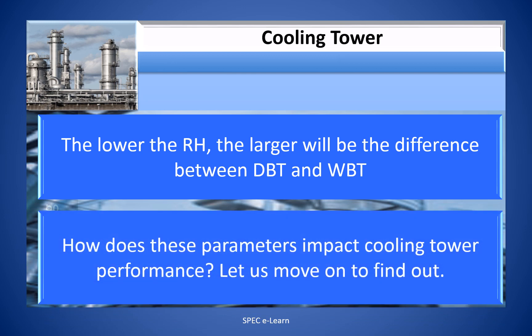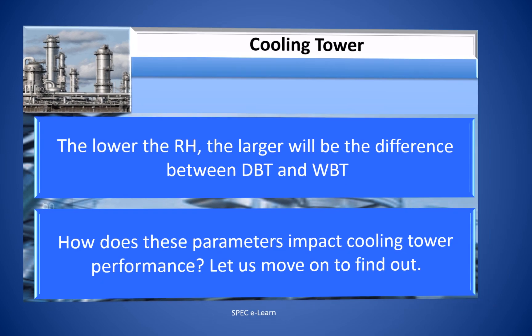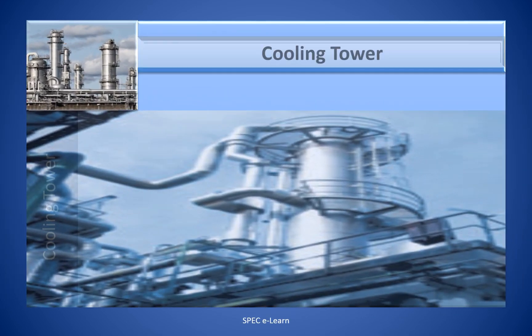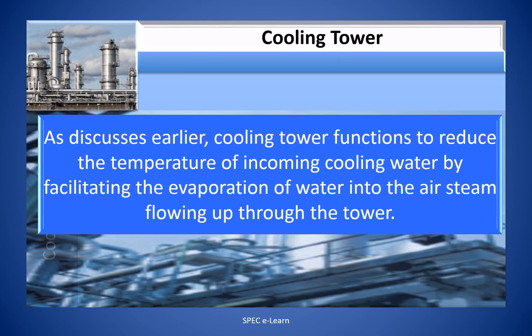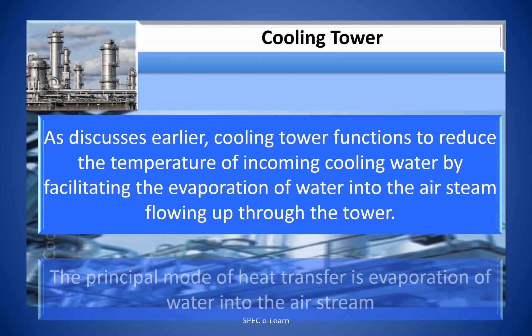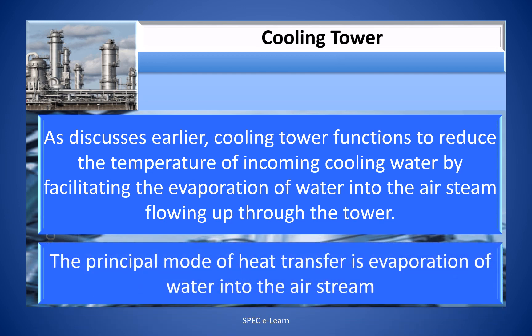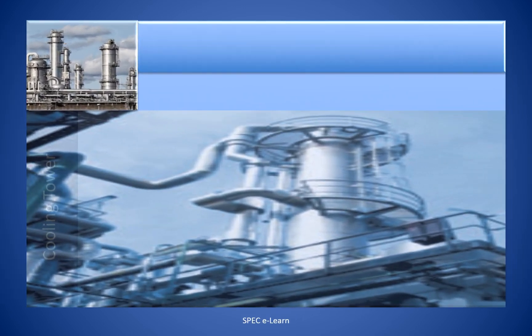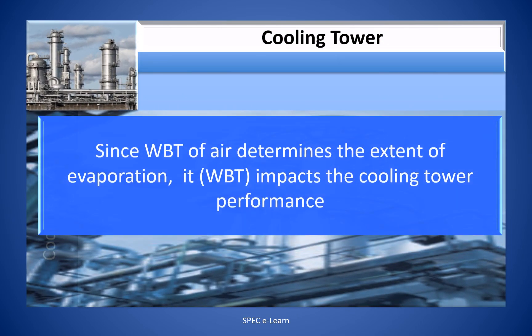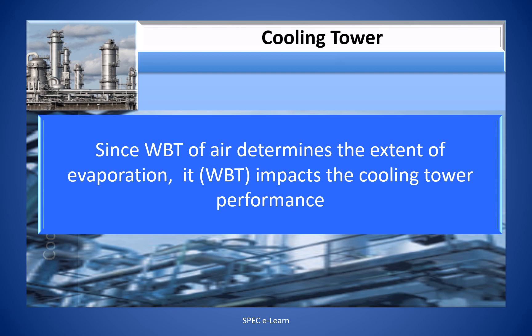How do these parameters impact cooling tower performance? Cooling tower functions to reduce the temperature of incoming cooling water by facilitating the evaporation of water into the air stream flowing up through the tower. The principal point of heat transfer is the evaporation of water into the air stream. Since the WBT of air determines the extent of evaporation, it directly impacts cooling tower performance. When WBT is lower, the water exiting the cooling tower will be at a lower temperature.